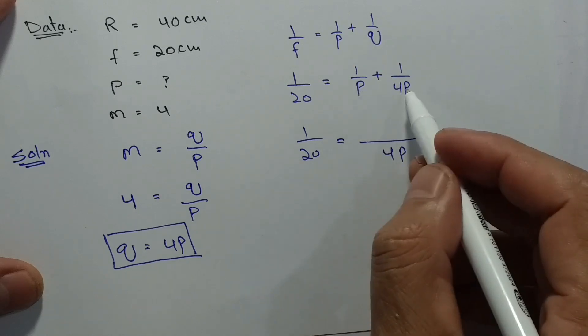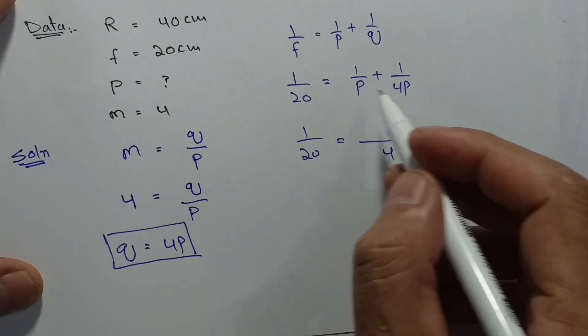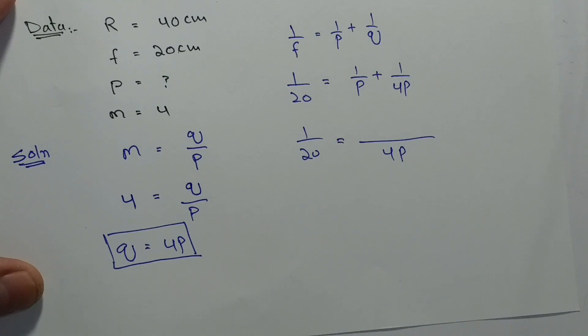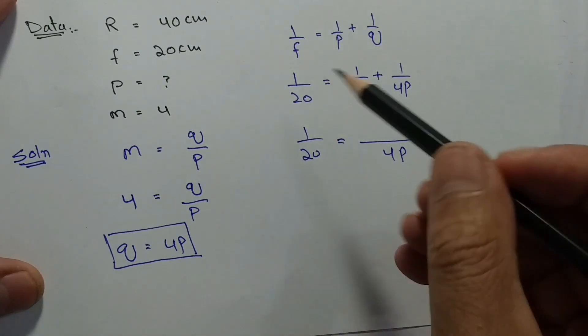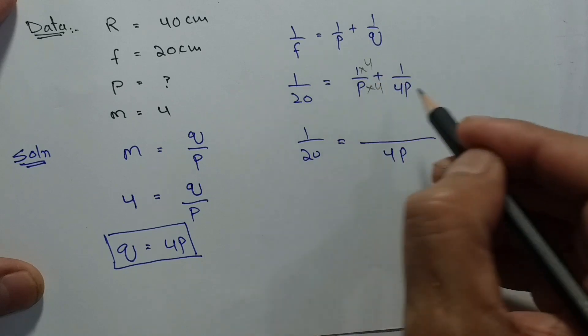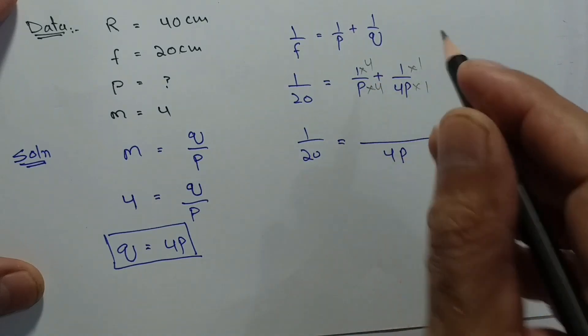One upon f equals one upon p plus one upon 4p. We will multiply with 4p. This gives us 4 upon 20 equals 5 upon 4p.